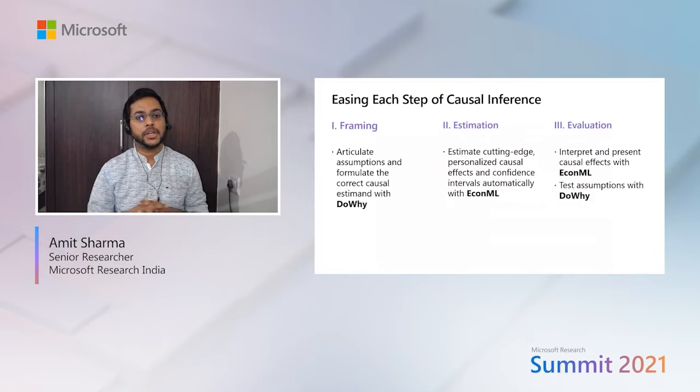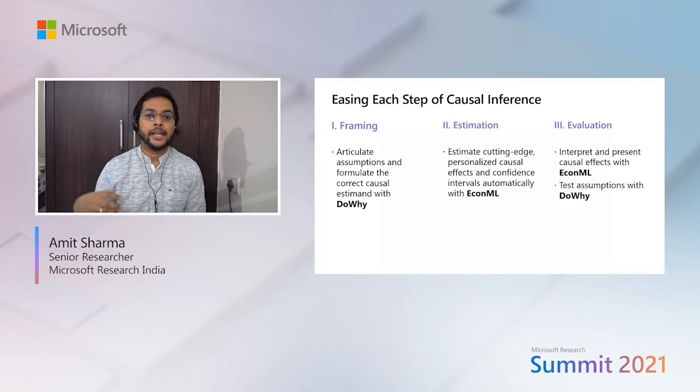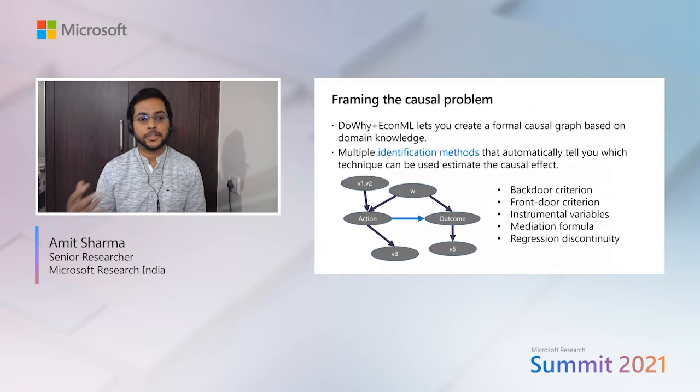With this tool, you get a battery of different estimators that you can use for your problem and compare them. Finally, the question is evaluation — you may want to know how good your estimate is and understand what the model is doing. Here you get interpretability and presentation of causal effects in a visual way, as well as ways to test your assumptions and test the validity of your estimate itself. In the next few slides, I'll talk about each of these problems and how our solution helps you do this in a methodological way.